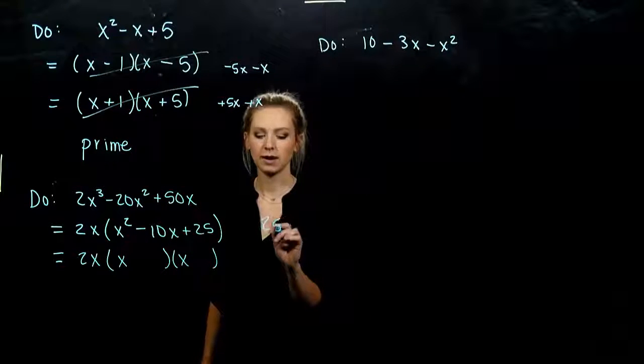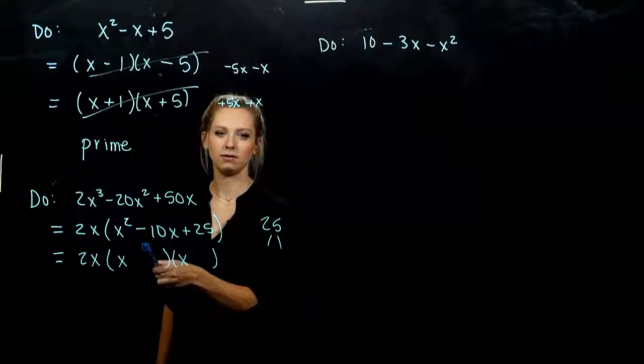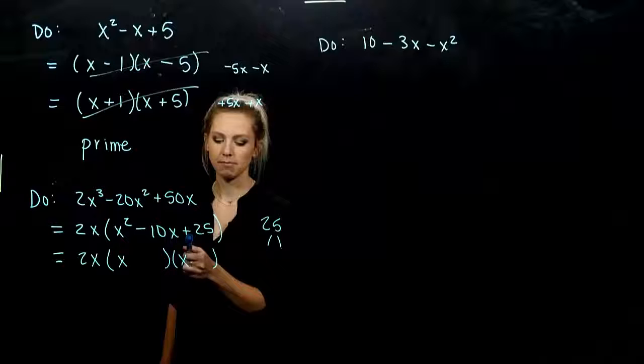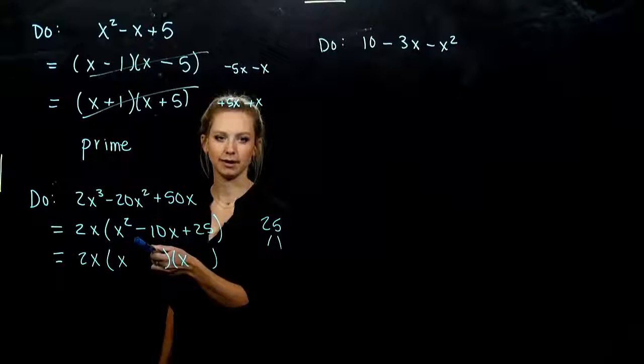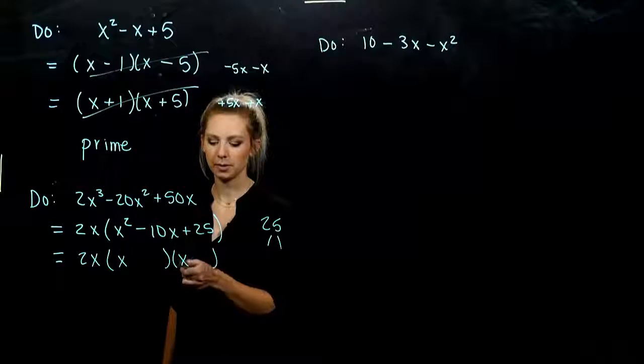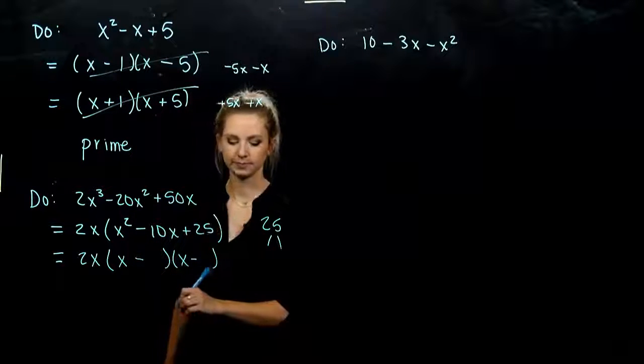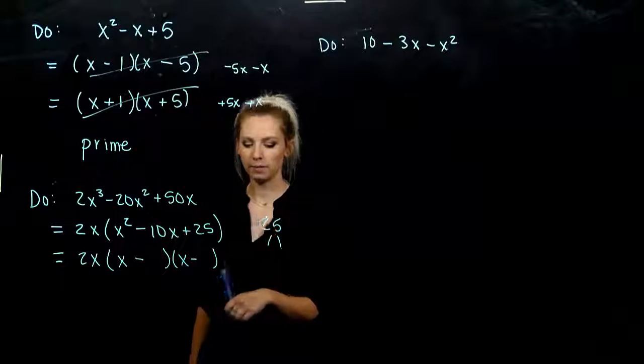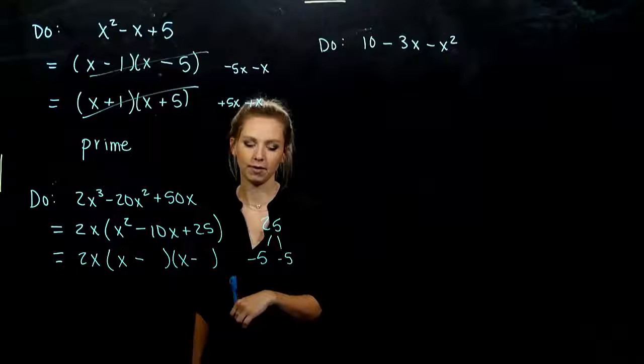So what are we looking for? Combo, multiplying to 25, adding to negative 10. When I multiply, I need it to be positive. But when I add it, I need it to be negative. So what does that tell me about my signs here? They both need to be negative. And what combo of factors will get us there? Negative 5, negative 5.